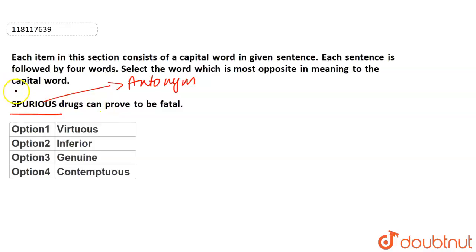Spurious means artificial, which are not real. Right? Those drugs that can be found to be deadly. Right?